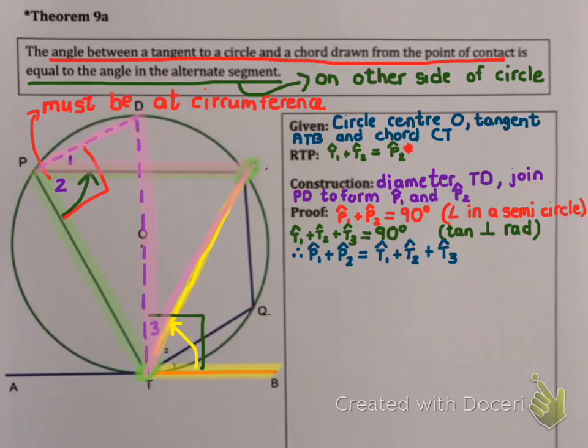Now if you look carefully, I can see the butterfly angle shape and theorem 4 says that angles in the same segment are equal. So I'm going to argue that P1 and T3 are equal. And this is theorem 4. Angles in the same segment.